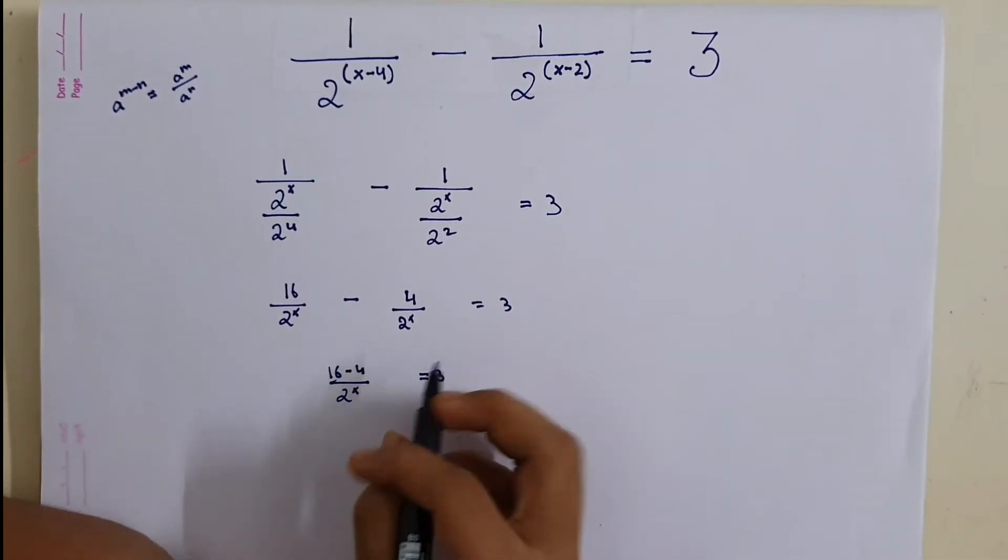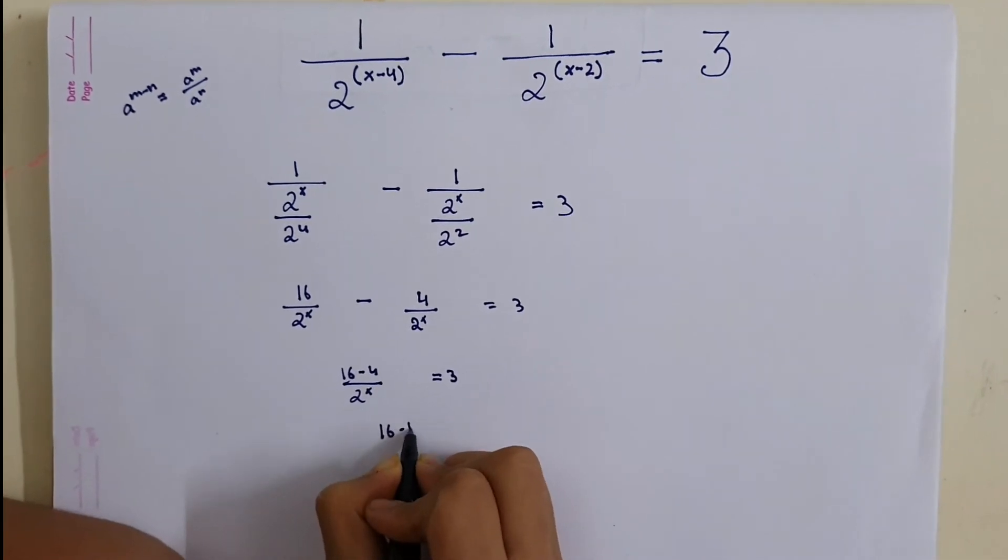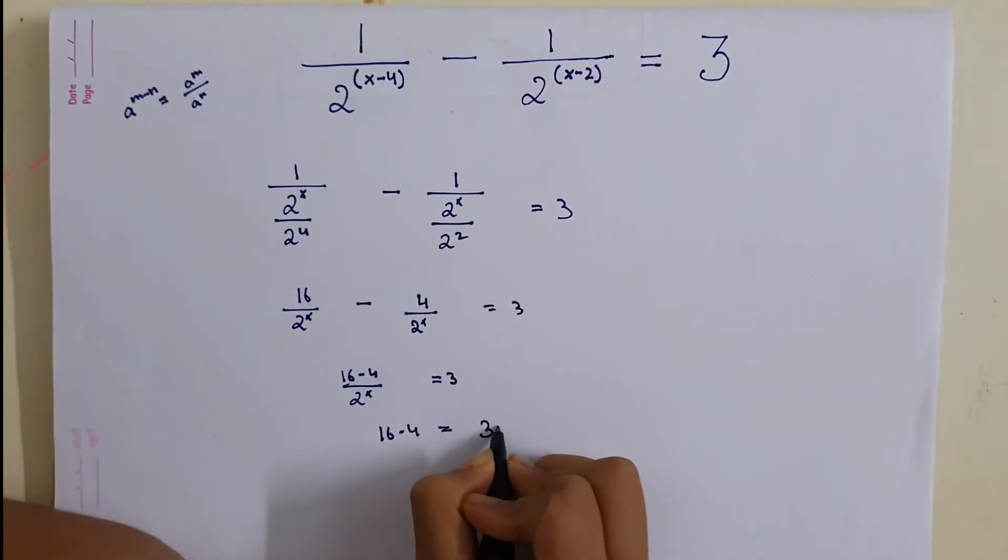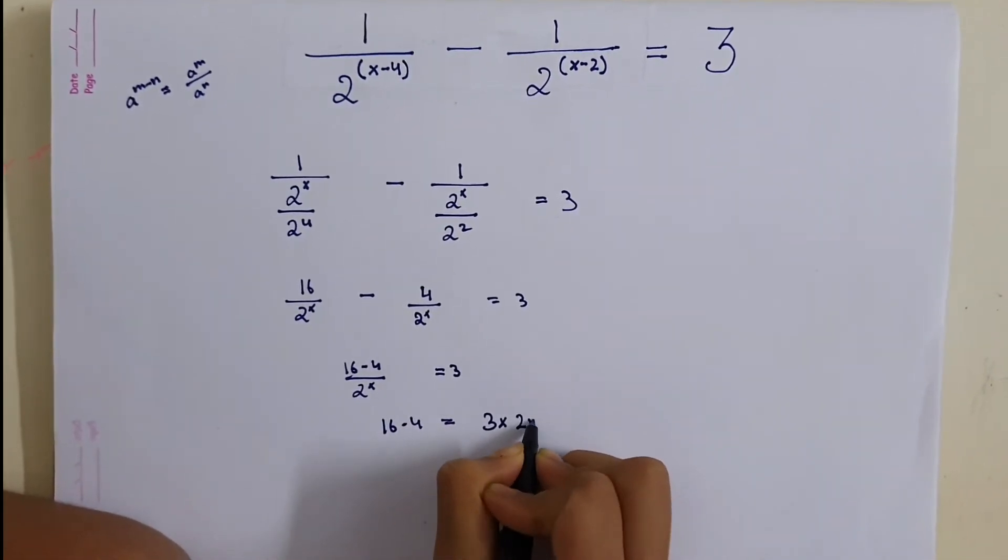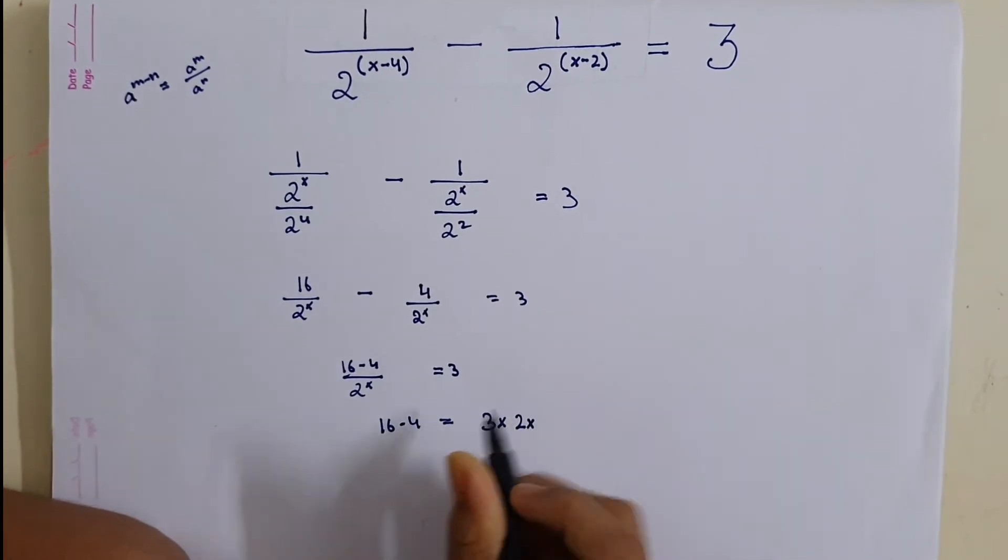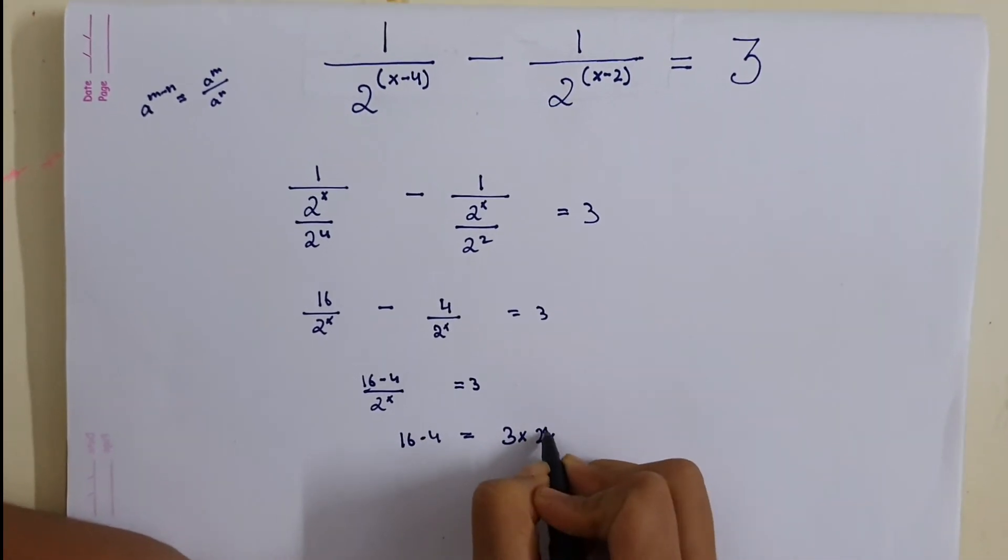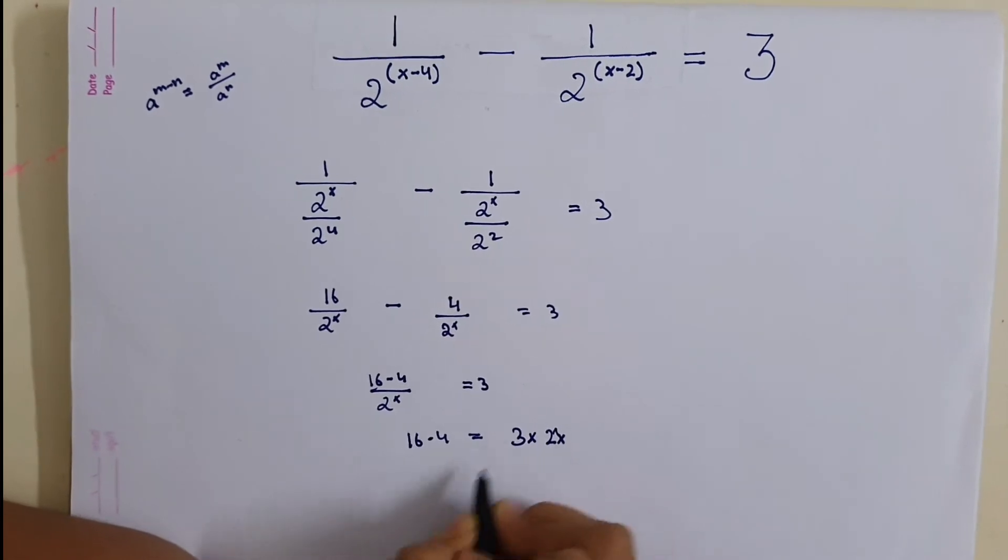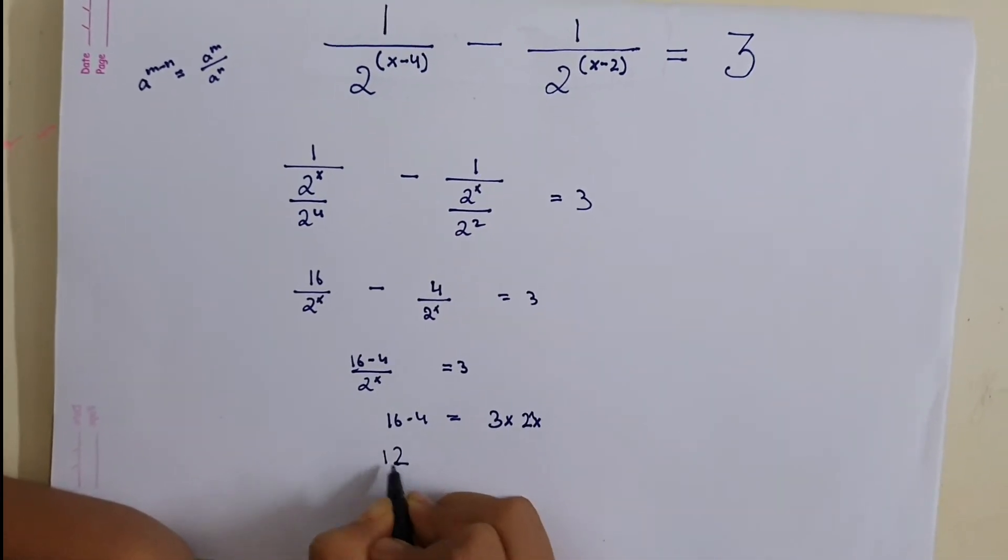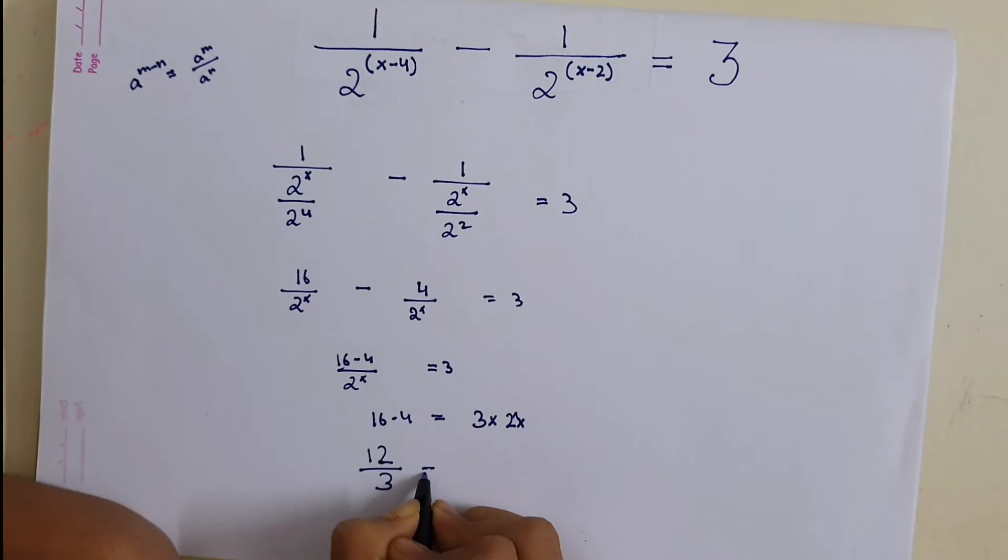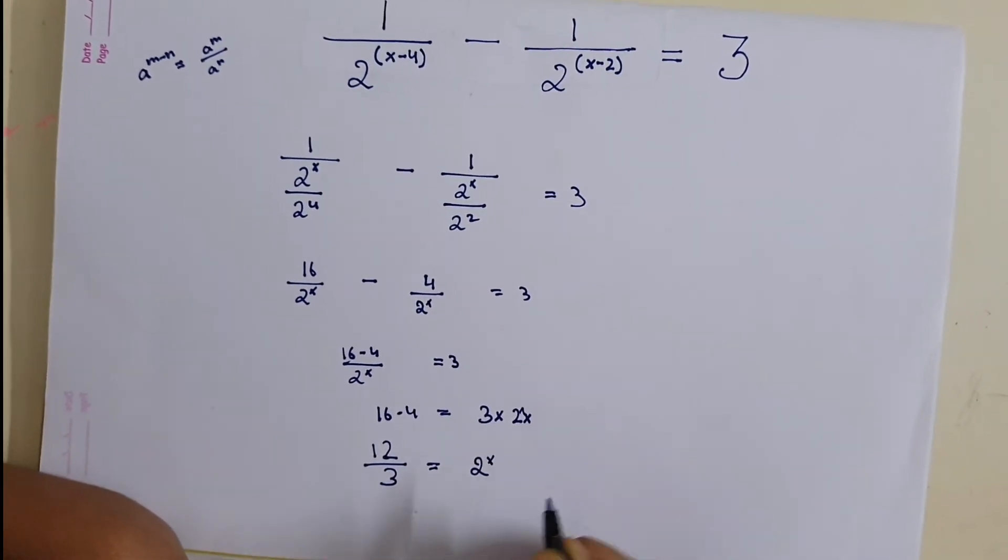So this is going to go to the RHS. And this will become 12 by 3 equals to 2 raised to power x.